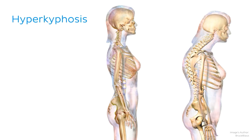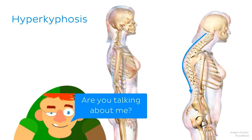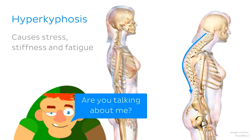Hyperkyphosis is a condition in which the thoracic spine is more curved than normal, causing the back to appear rounded and hunched. And as well as causing a hunchback like we see in Quasimodo, it can also cause back pain, stiffness and fatigue.